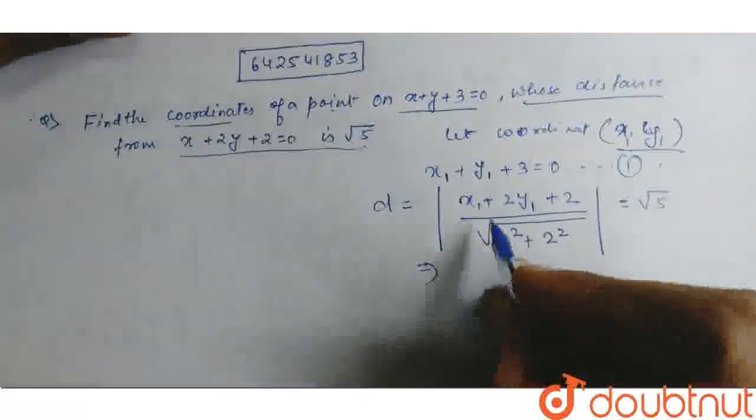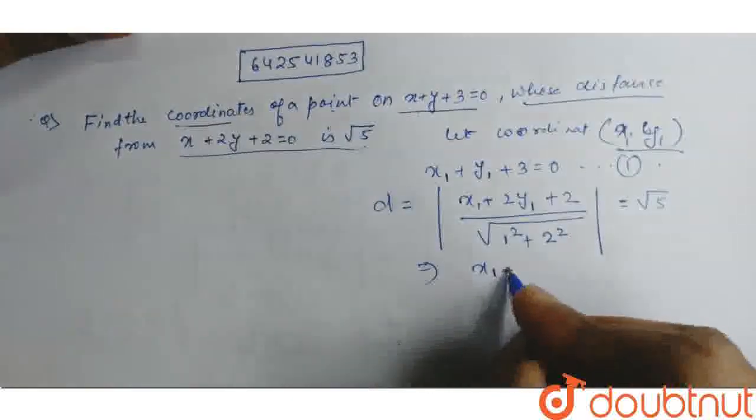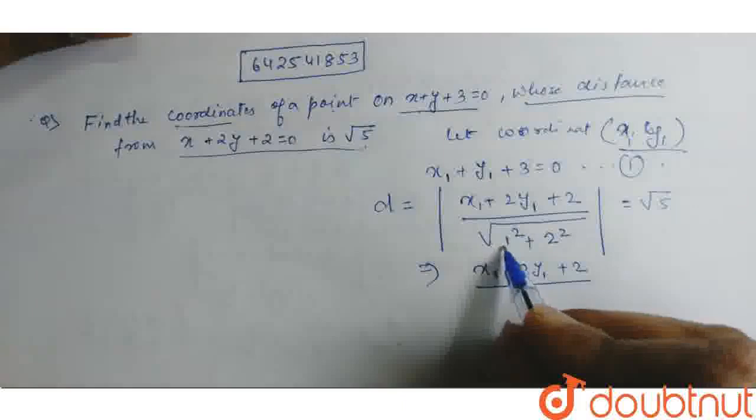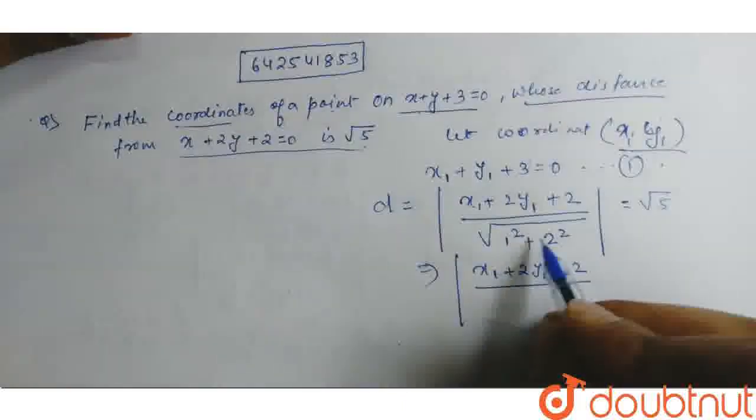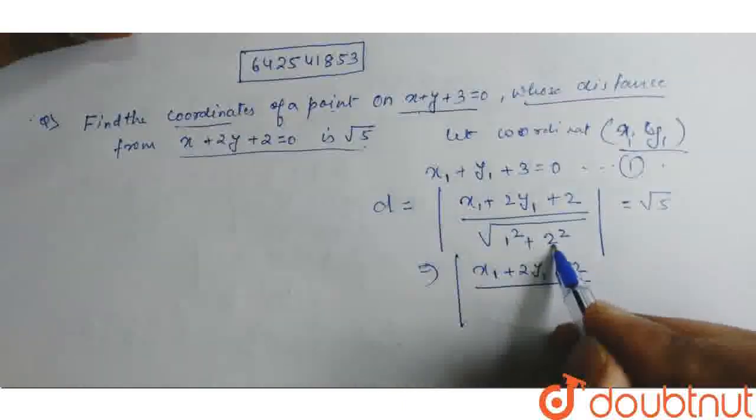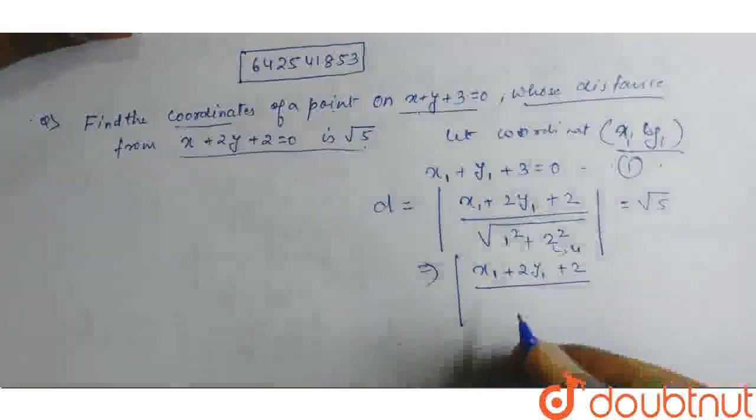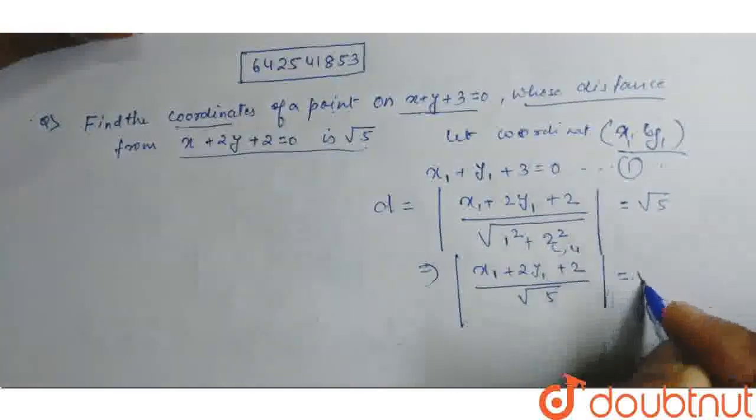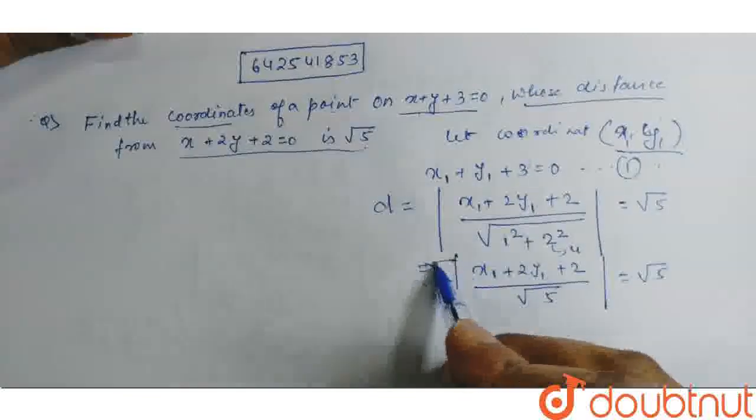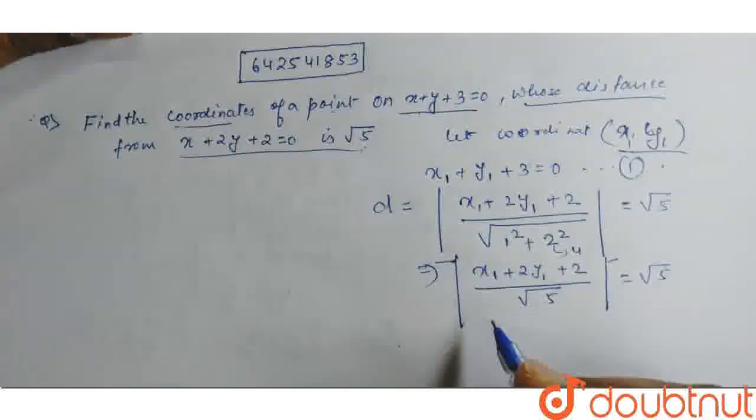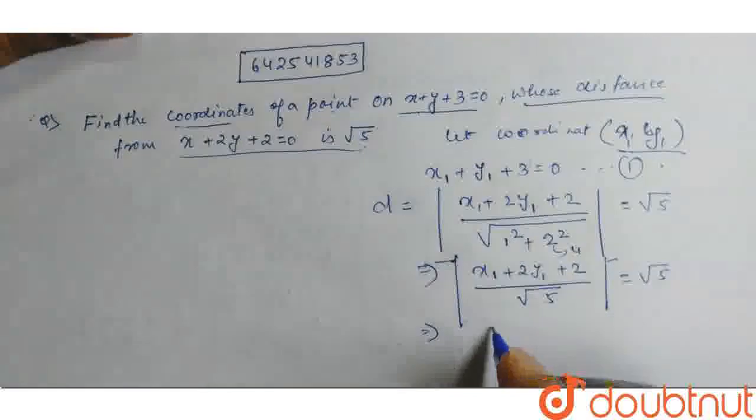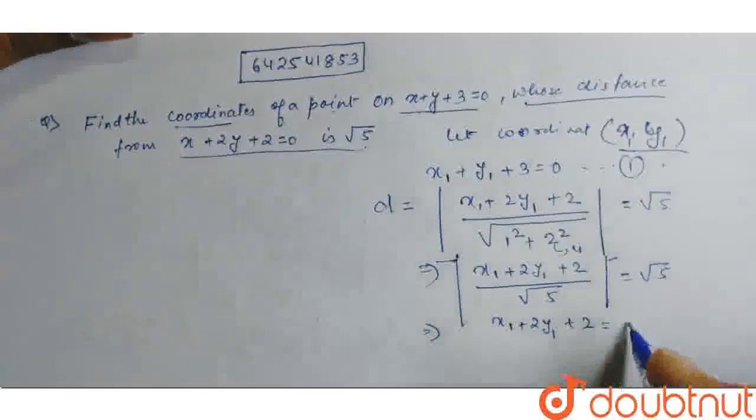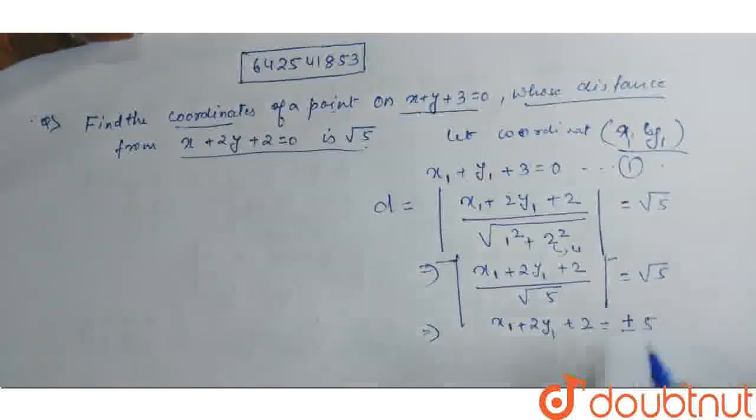Now, upon solving we get x1 plus 2y1 plus 2 equal to... 1 plus 2 square is 4, so 4 plus 1 is 5. Root 5 times root 5. Now, upon removal of this mod, we get x1 plus 2y1 plus 2 equal to plus minus 5.